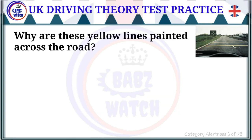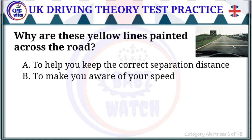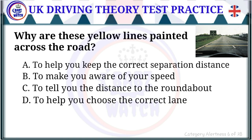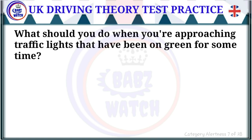Question 6 of 28: Why are these yellow lines painted across the road? The correct answer is: to make you aware of your speed. These lines are often found on the approach to a roundabout or a dangerous junction. They give you extra warning to adjust your speed — look well ahead and do this in good time.